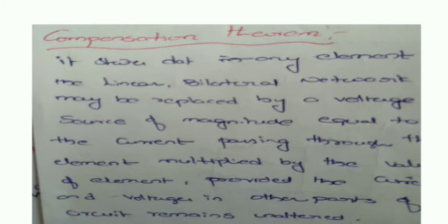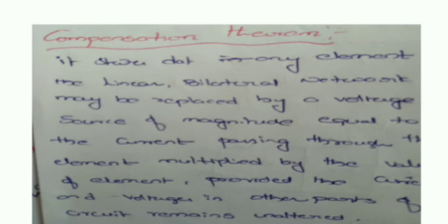First, for the given circuit, calculate the current in the respective branch (case 1 current). If you want to insert a change in resistance ΔR, you need to calculate how much current to inject to compensate. The case 1 current multiplied by ΔR is taken as the voltage source. Using that voltage source, calculate the case 2 current. The difference between case 1 current and case 2 current gives the compensating current.